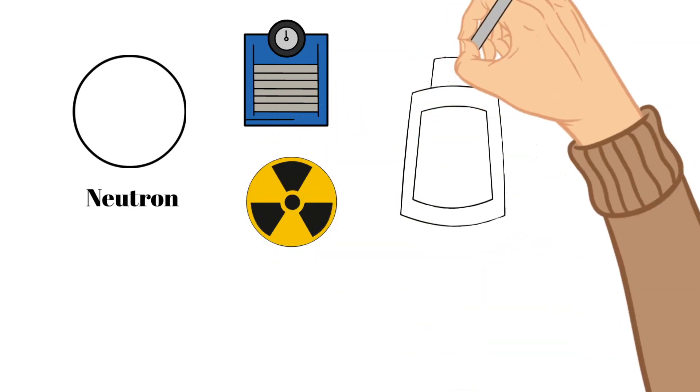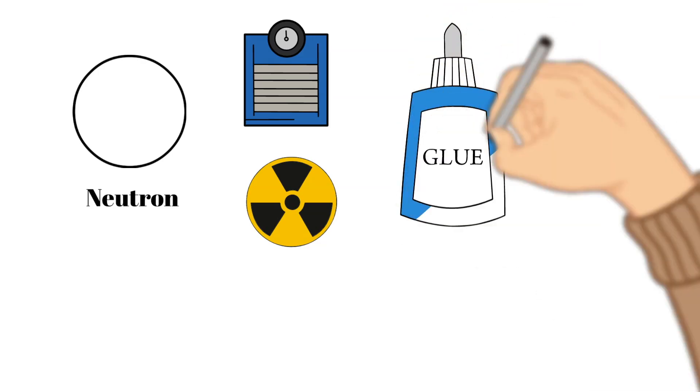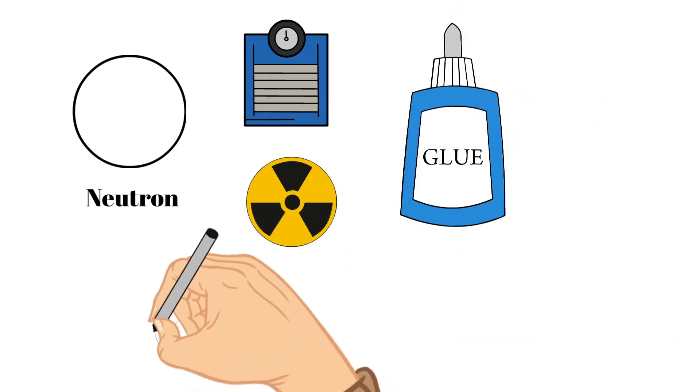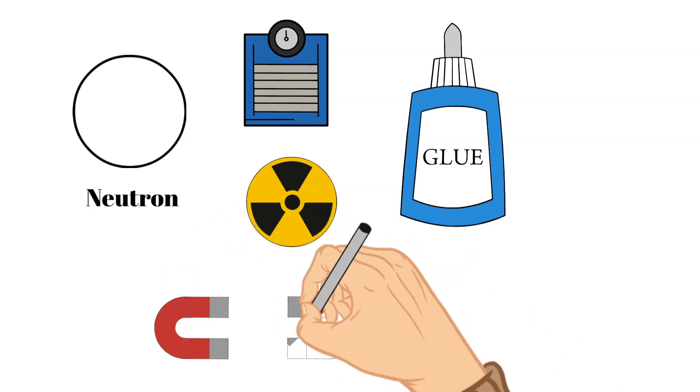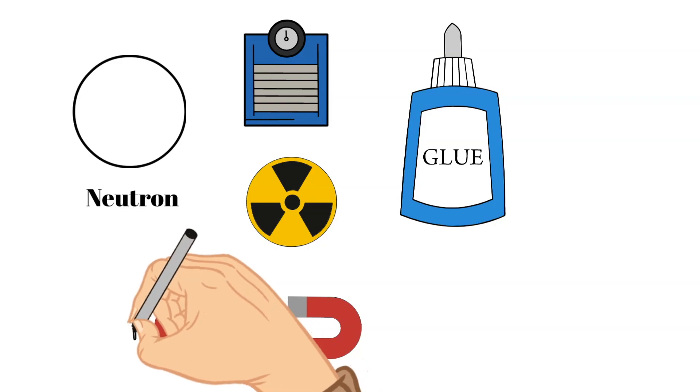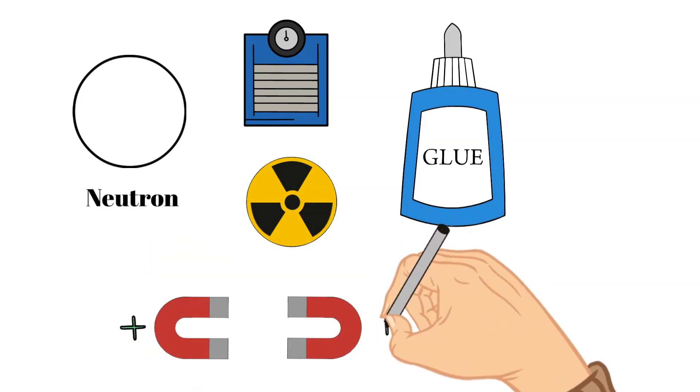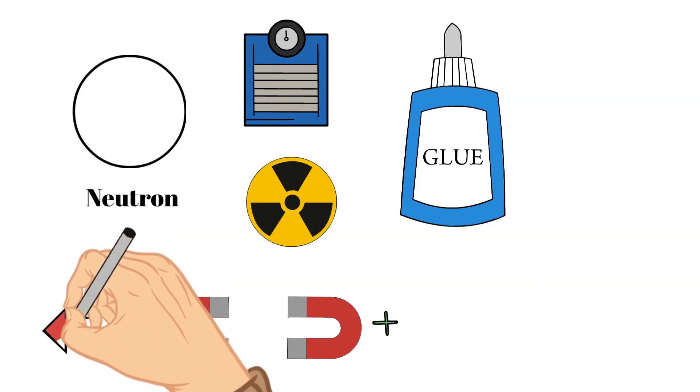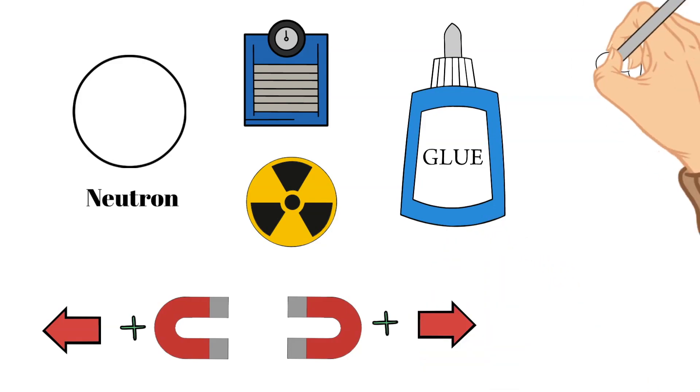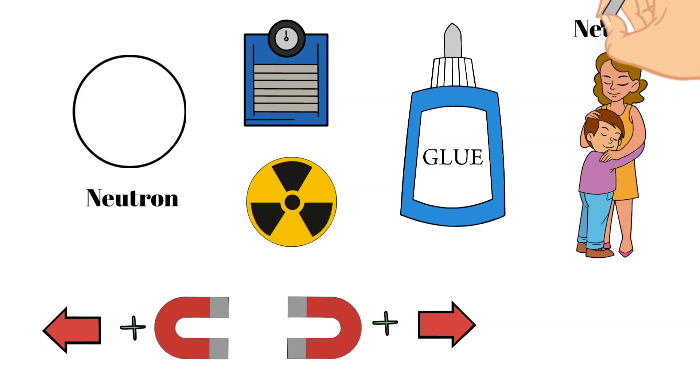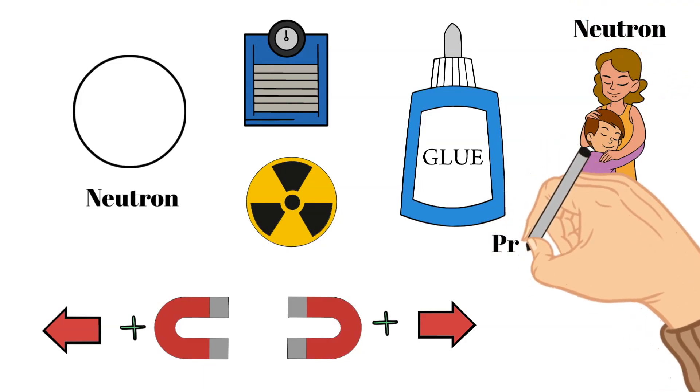Another job of neutrons is that they are useful for holding the atom together. Protons are all positively charged, so if you think about it, they are going to repel each other, just like if you bring together the same charges of a magnet. The neutrons don't have a charge, and because they are tightly bonded together with the protons, they exert enough force on the protons to hold this nucleus in the center of the atom together.